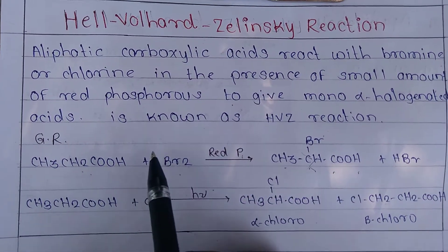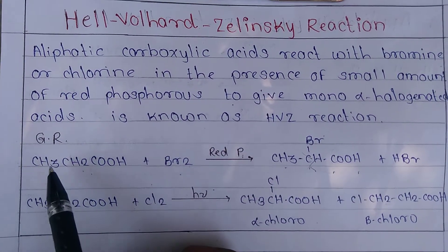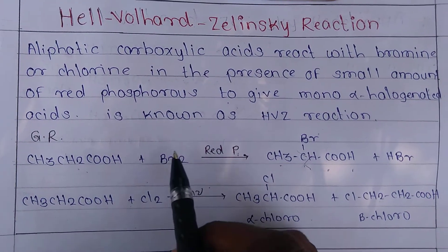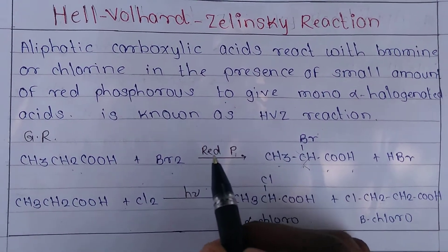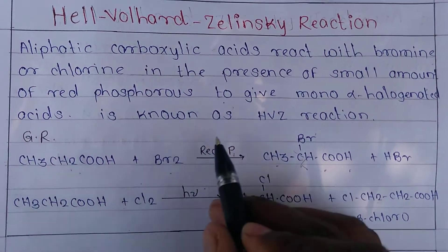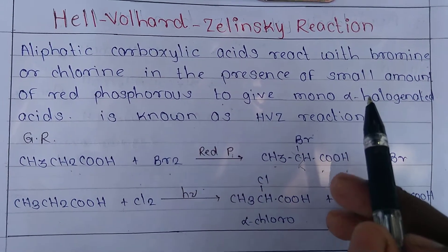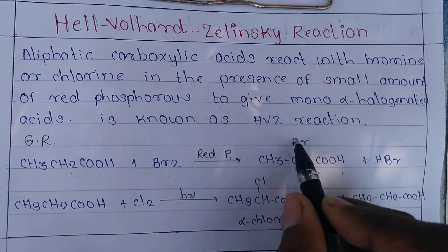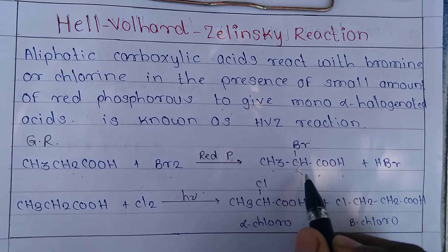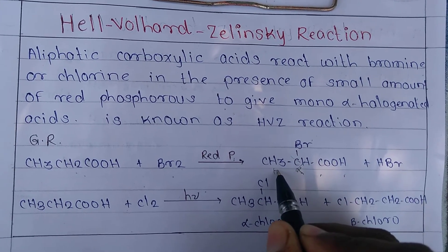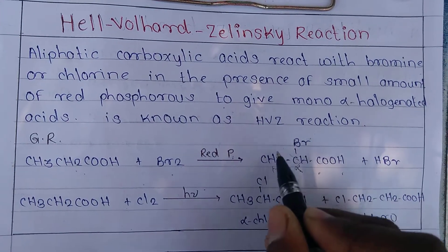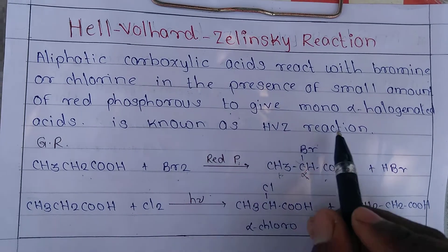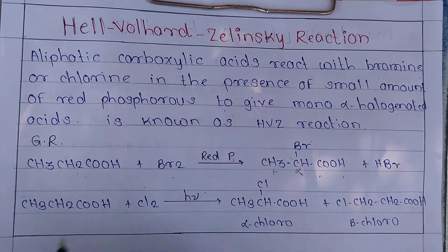Aliphatic carboxylic acids, such as acetic acid, react with bromine (Br₂) in the presence of a small amount of red phosphorus to give mono alpha-halogenated acid — where 'mono' means one, and the alpha position is adjacent to the COOH group. This is the alpha position; the next is the beta position.